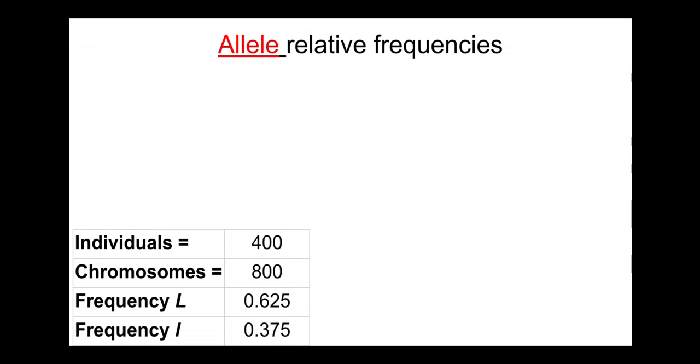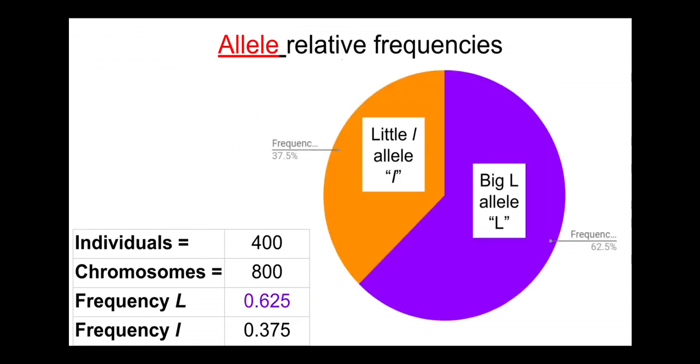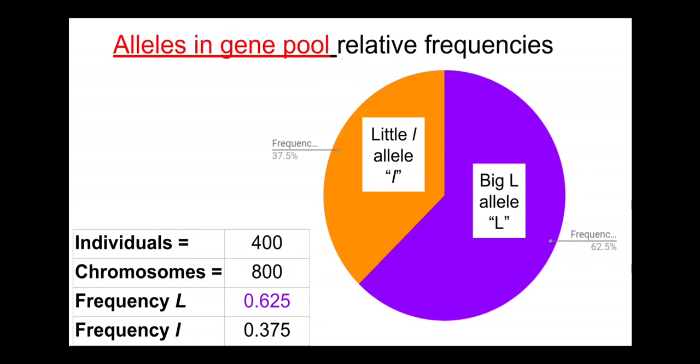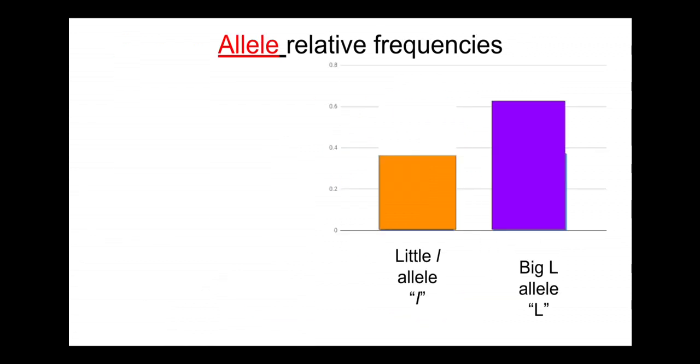We can start off with our allele relative frequencies. We can make a pie chart, it's a good way to visualize the relative frequencies of those alleles. This is the frequency of alleles in our theoretical gene pool. We can also present it as bar graphs if we want.